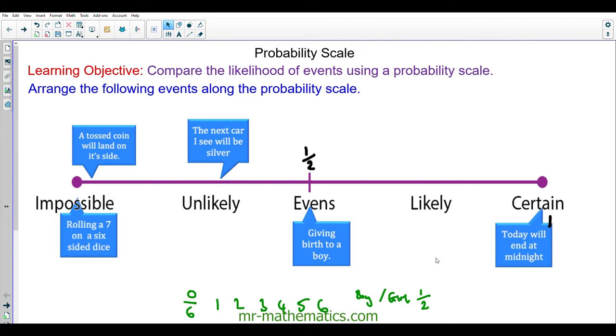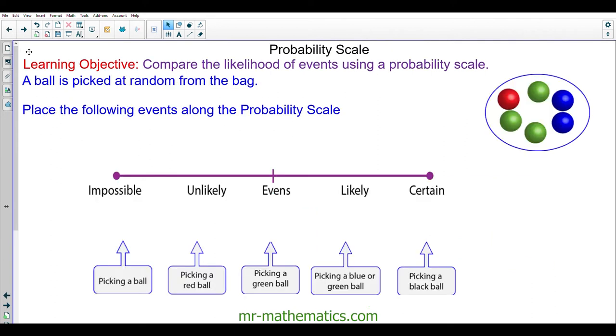Let's move on to the next question. A ball is picked at random from a bag. Place the following events along the probability scale. You can try this by pausing the video and resume when you're ready. Before I begin arranging the events, we can see there are six balls in total. The probability of picking a ball. Well, it says here that a ball is picked at random, so it must be certain that a ball is picked.